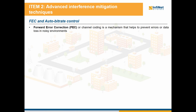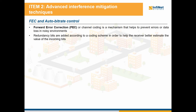Forward error correction is a method for preventing errors or data loss in noisy environments. It is also called channel coding, and it is based on adding redundancy bits to the data stream by using a coding scheme. This will help the receiver to better estimate the value of the received bits.